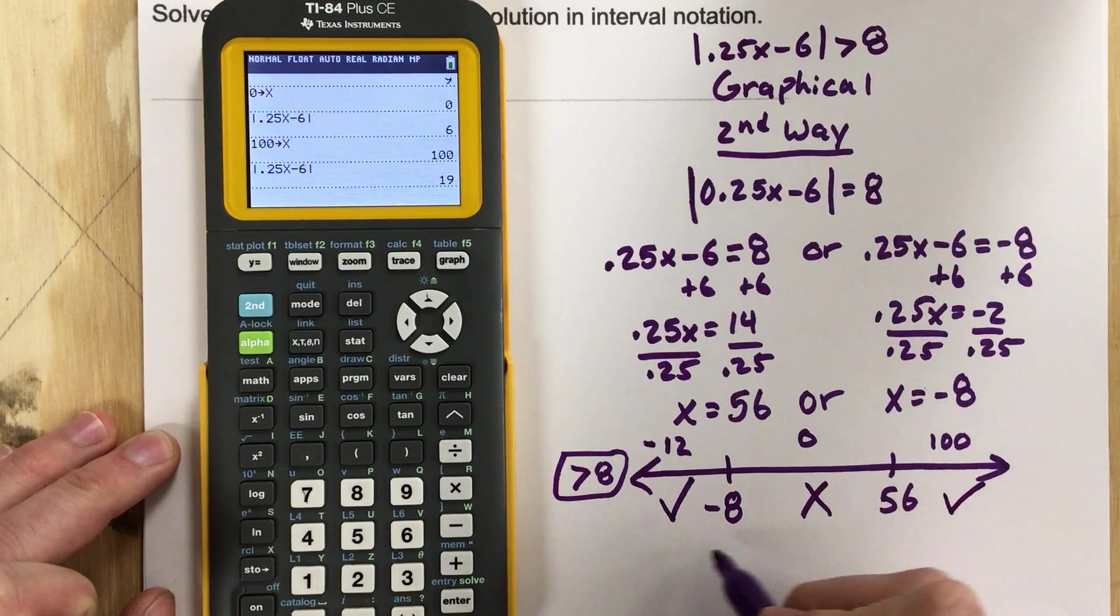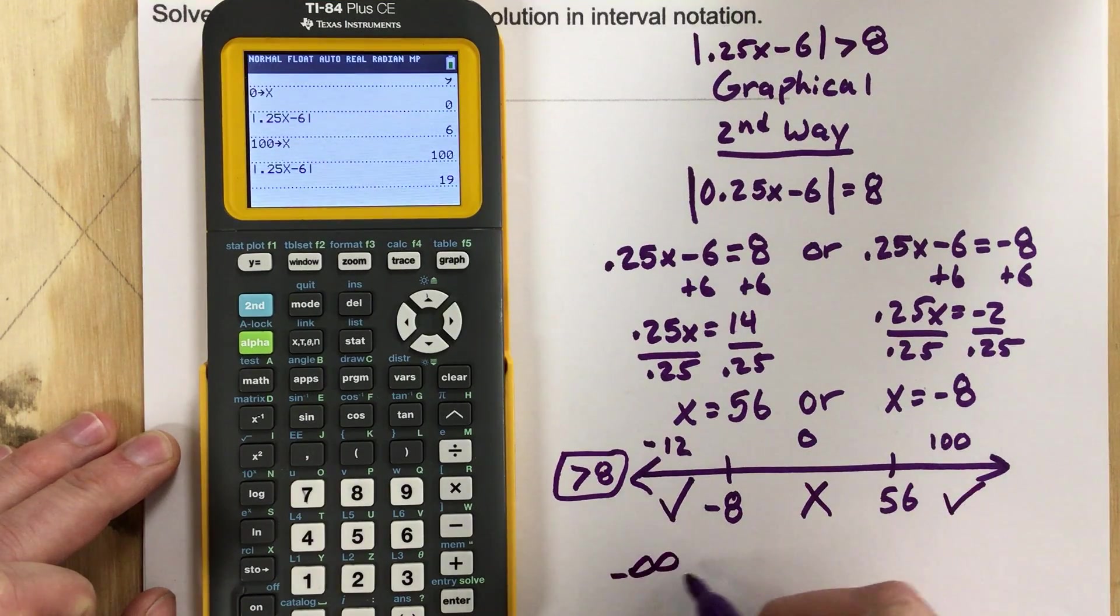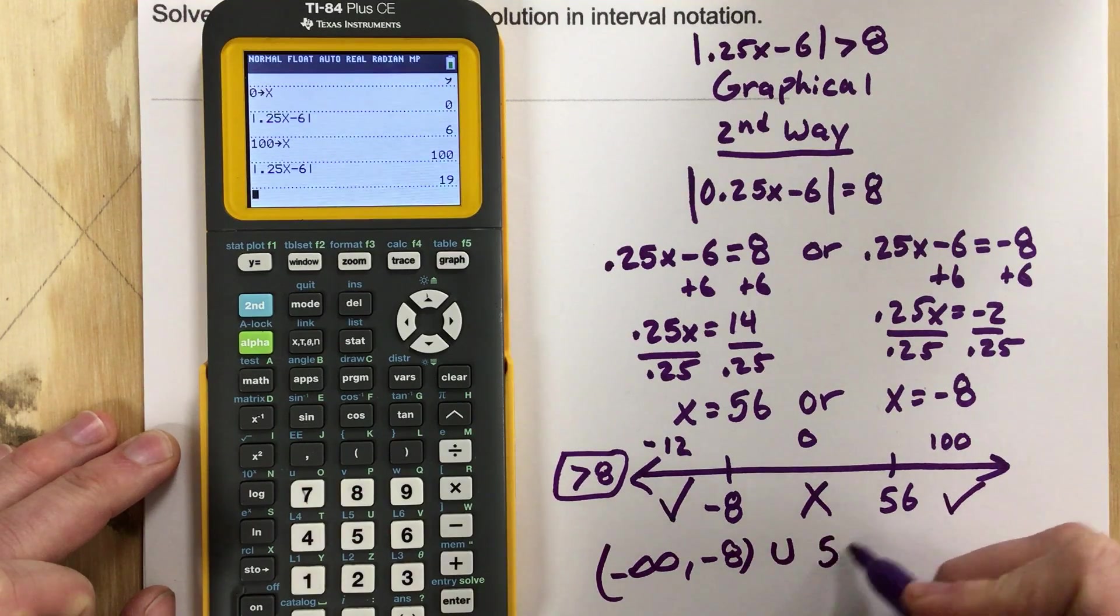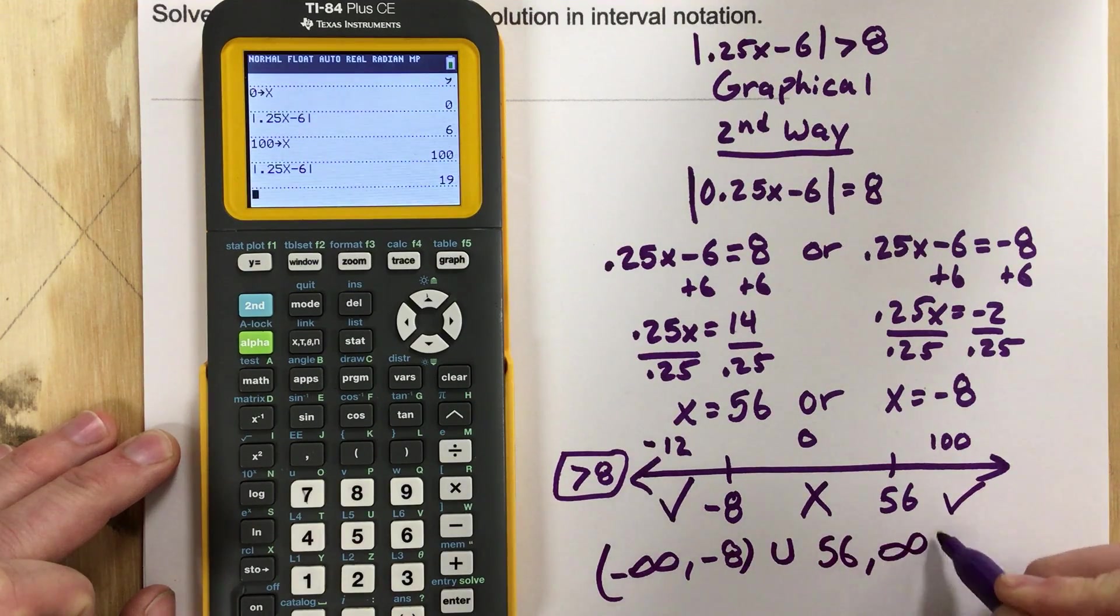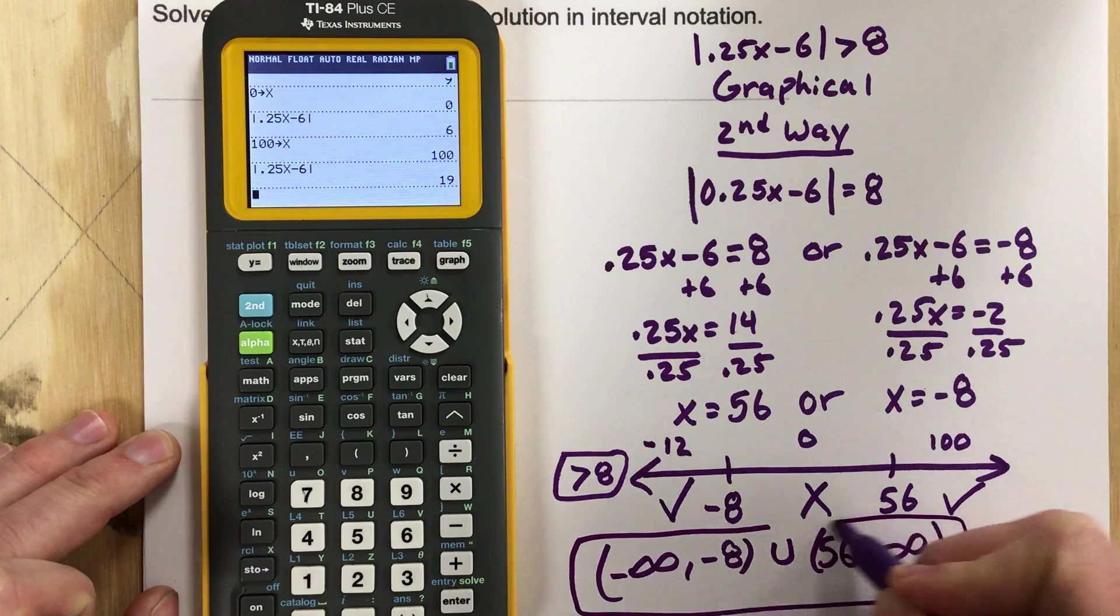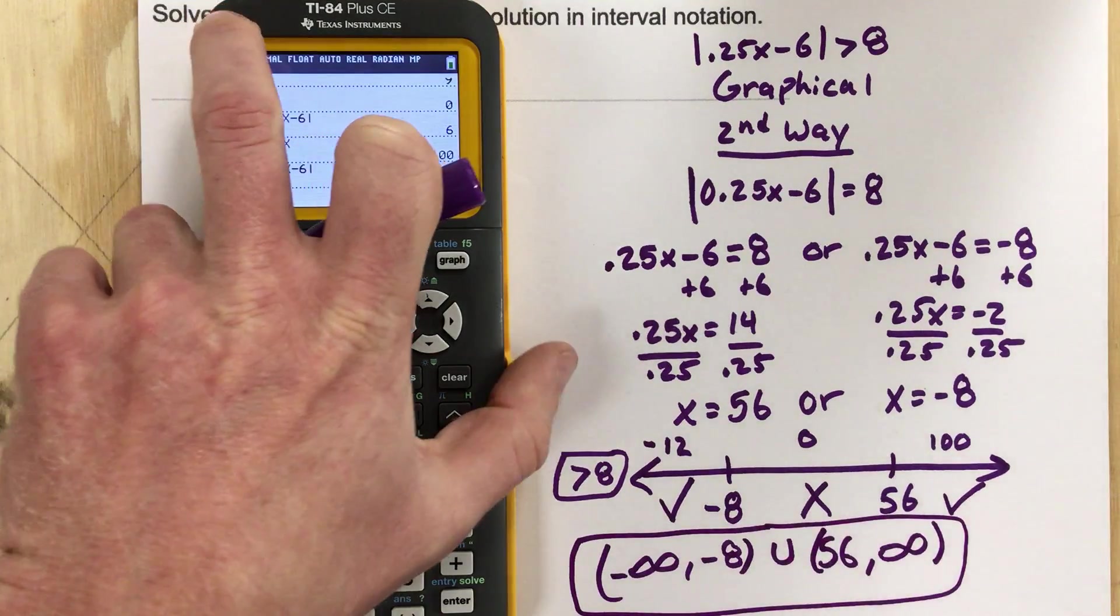So my solutions go from negative infinity to negative 8, but not including negative 8 because there's no equal sign on the inequality. Union 56 to infinity. And that's the solution for this problem graphically.